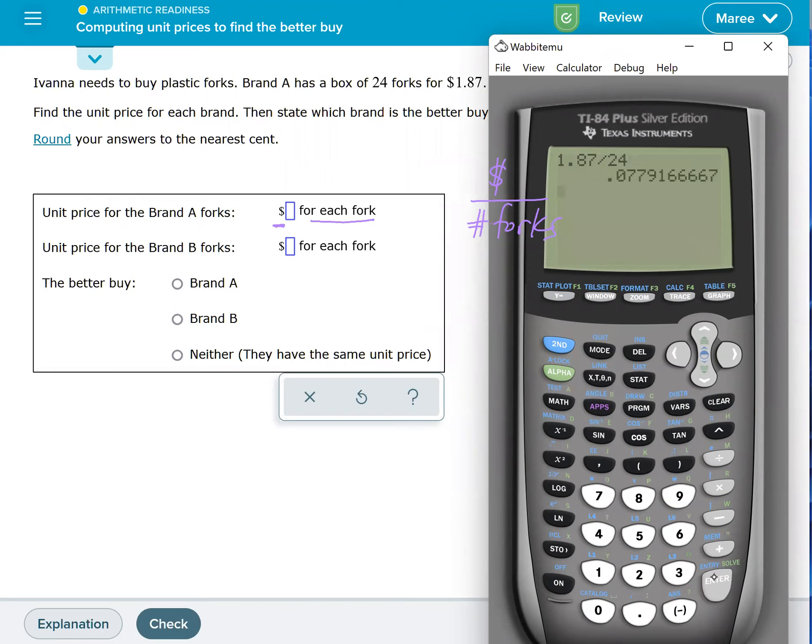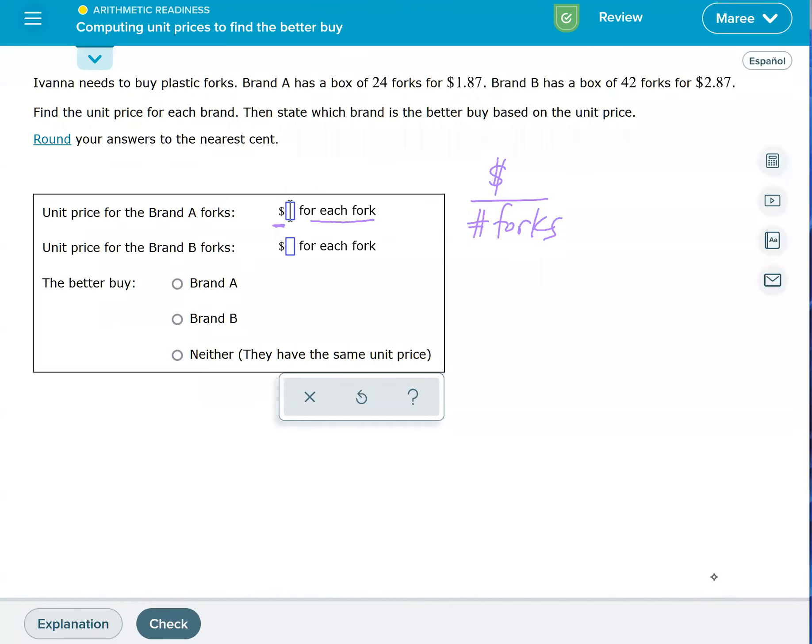are, and it's going to be about 0.078 or eight cents. We had to round, so it's going to be eight cents for each fork. And then we're going to